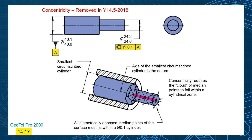In the old standard, concentricity was defined as a cloud of median points that have to be within your tolerance zone. You'd have your datum axis A, just like position tolerance, and this creates a cylindrical tolerance zone of 0.1. It's not the axis of the feature that has to be within the tolerance zone, but the cloud of median points.